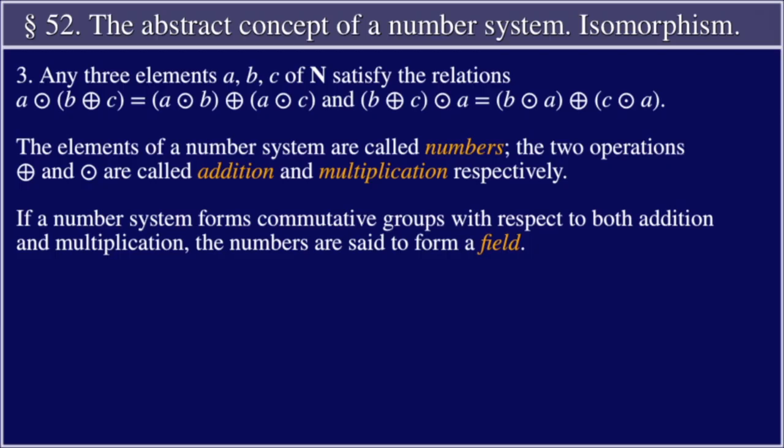3. Any three elements a, b, c of N satisfy the relations: a times the quantity b plus c equals the quantity a times b plus the quantity a times c, and the quantity b plus c times a equals the quantity b times a plus the quantity c times a.